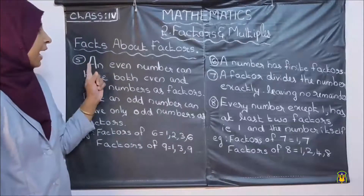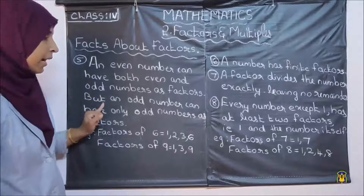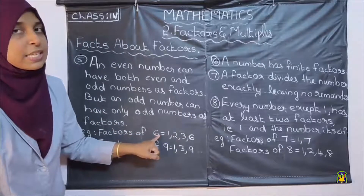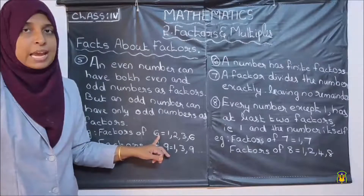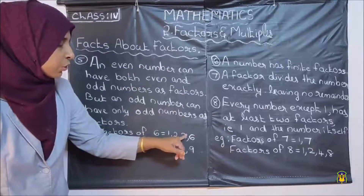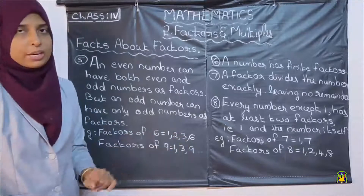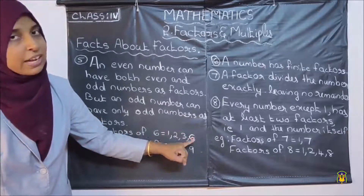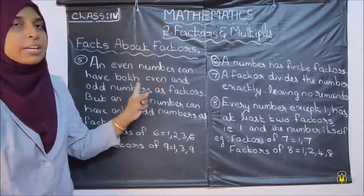Fifth point: an even number can have both even and odd numbers as factors. For example, factors of 6 — 6 is an even number. Factors of 6 are 1, 2, 3, 6. Here 2 and 6 are even numbers, and 1 and 3 are odd numbers. So 6, being an even number, has both even and odd numbers as factors.